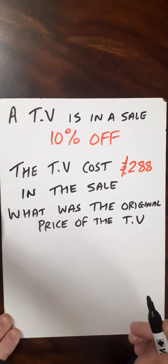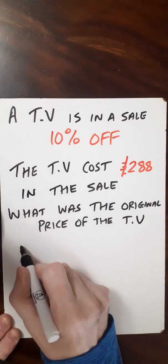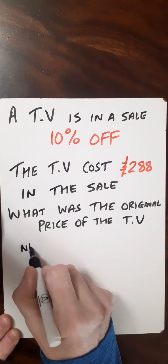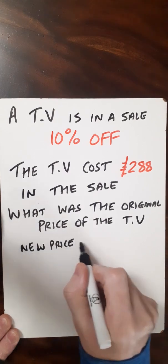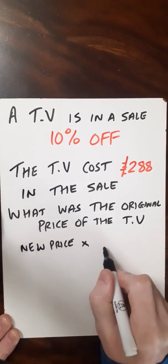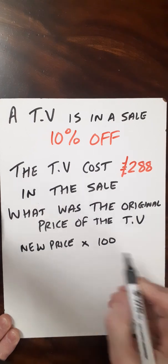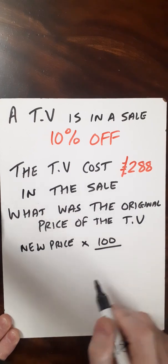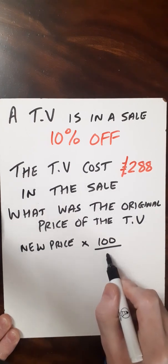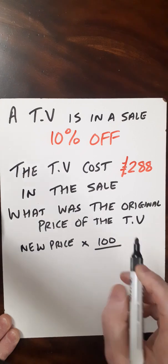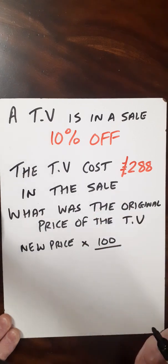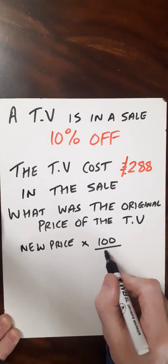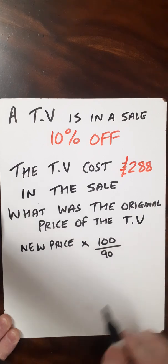The way we can do this is to take the new price and multiply it by 100, then write in the denominator the reduction. It's 10% off, so the TV is now at 90% of the original price. So we do 100 over 90.